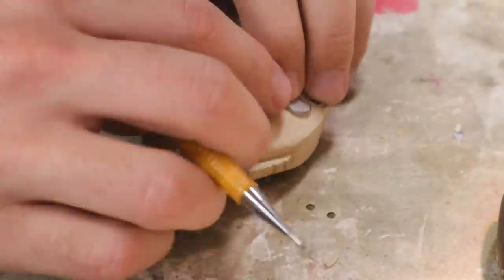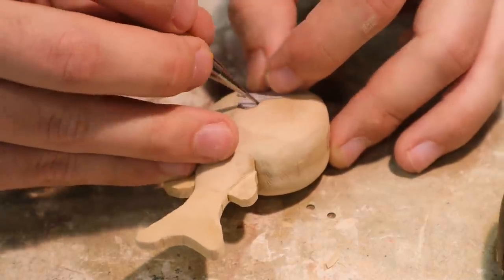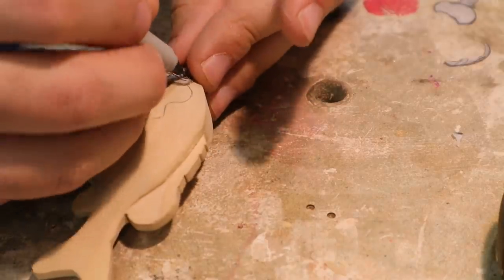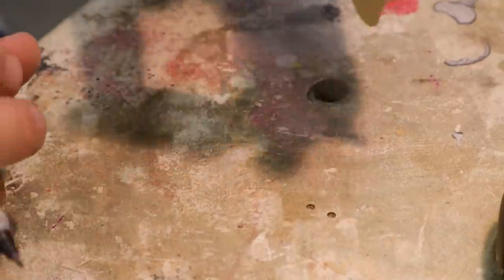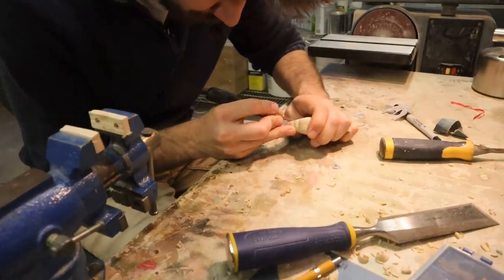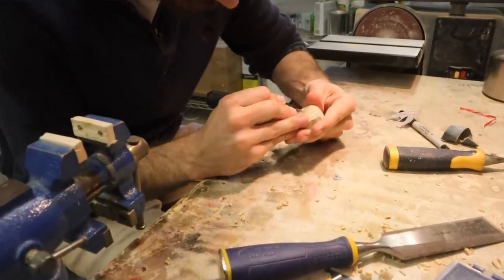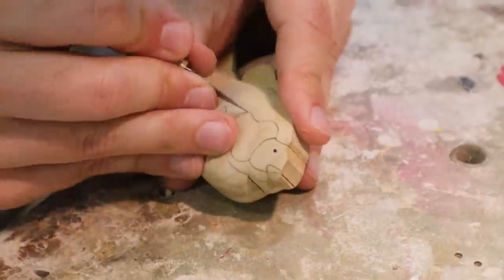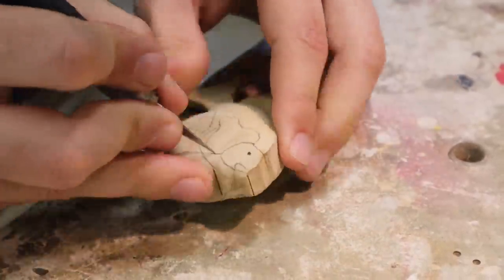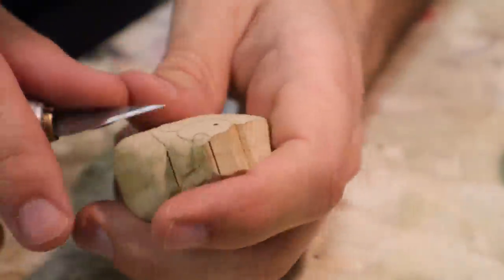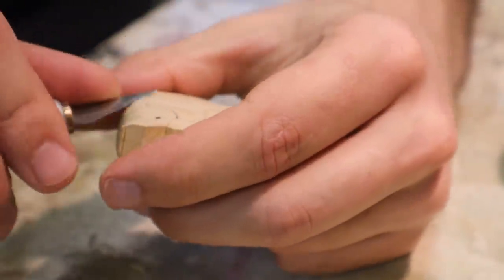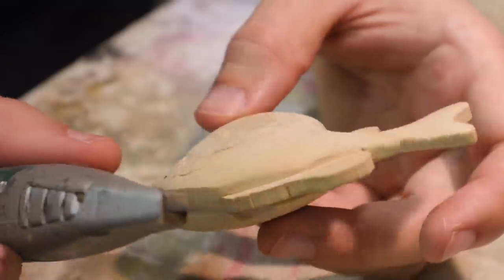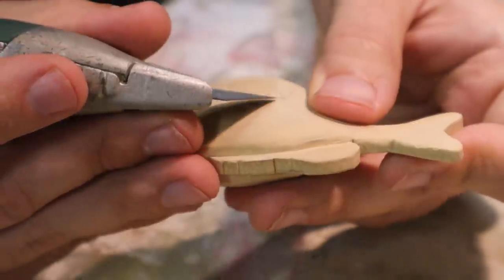Next thing to do is draw out where these gills go and carve them out. I've carved with a lot of different things, and it might sound weird, but I don't know, you just can't beat a utility knife.